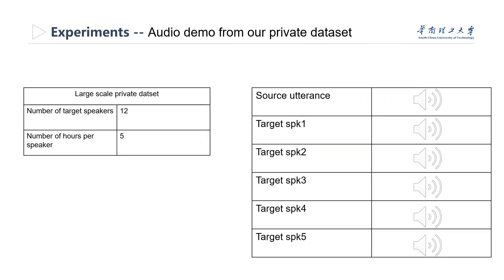Here are some converted samples trained with a large-scale private dataset. The ASR model is trained with 6,000 hours of Chinese speech, and each of the 12 target speakers is trained with 5 hours of their speech. Therefore, we achieve almost indistinguishable converted utterances compared to real ones.